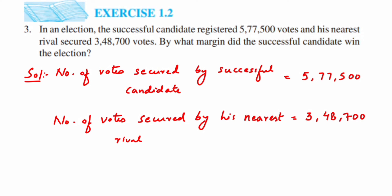To find how many more votes the successful candidate got, we're going to subtract these two numbers. We'll get 0 here. Then since we cannot subtract 7 from 5, we're going to take a borrow, so this will become 6 and this will become 15. So 15 minus 7 is 8.